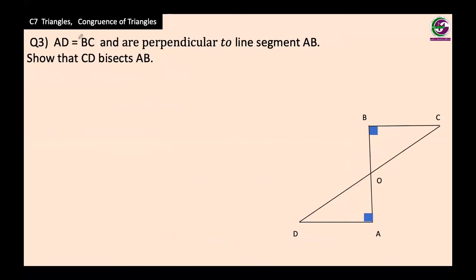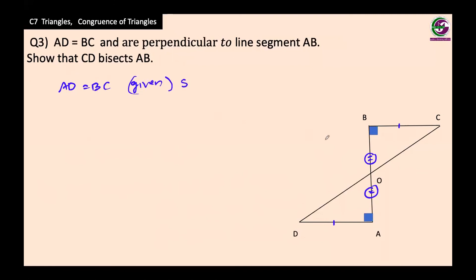Let us move on to question three. AD equals BC — these two sides are equal. Also, AD and BC are perpendicular to AB, which means angle B is 90° and angle A is 90°. These are the given conditions. We have to show that CD bisects AB, meaning BO equals AO. At point O, angle AOD is congruent to angle COB because they are vertically opposite angles.